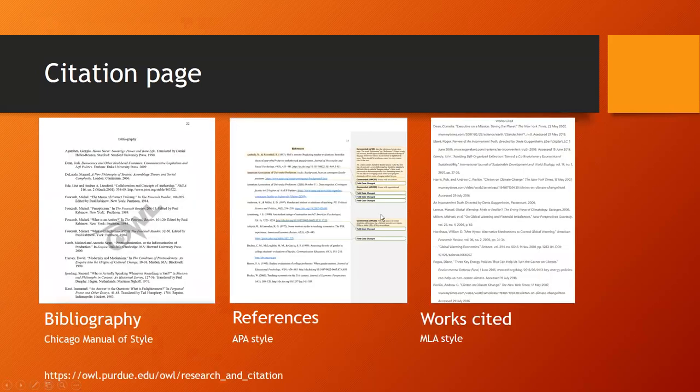Here are a few examples of citation pages. We've got the bibliography for the Chicago Manual of Style — they use last name and first name, though I've seen other examples of Chicago where they use first name, last name. Then there's the reference sheet for APA, and the MLA style works cited sheet. The works cited and the references are going to be the two that look the most similar, but Chicago's bibliography and reference sheet are similar in their own ways as well. You really need to make sure you are following the exact guidelines depending on your style guide.